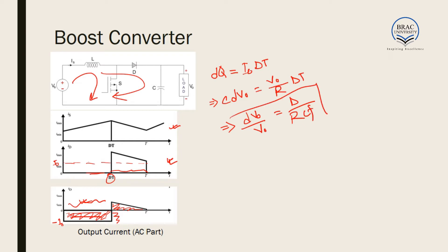From this, we get dV_output / V_output = D / (R·C·F). Using this expression, we can calculate the ripple voltage, and if the ripple voltage is given, we can calculate the required filter capacitance for the boost converter.